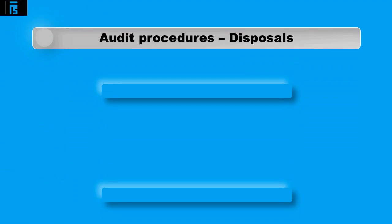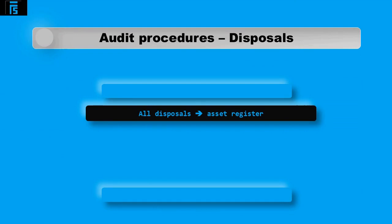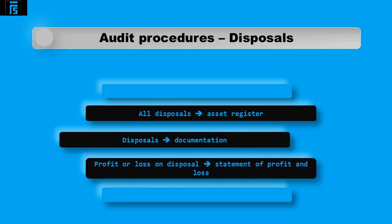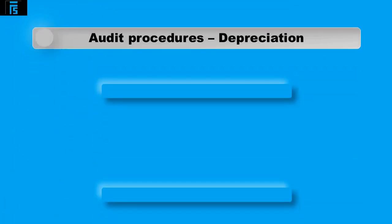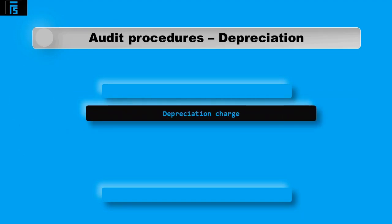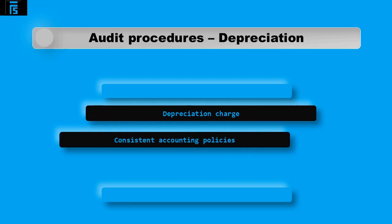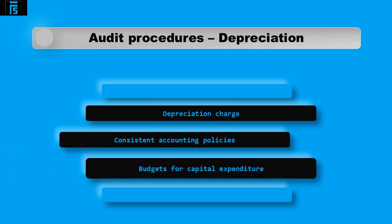For disposals in the year, the auditor should obtain a list of all disposals and agree to the asset register to ensure they have been removed. They can agree disposals to documentation such as sales receipts and bank statements to prove disposal, and review the profit or loss on disposal to agree with what has been recorded in the statement of profit and loss — verifying existence and accuracy. Depreciation must be audited by recalculating the depreciation charge for a sample of assets, reviewing accounting policies for consistency with prior years, and inspecting capital expenditure budgets to assess whether depreciation methods are appropriate — verifying valuation and accuracy.